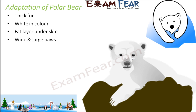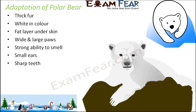Polar bears have wide, large paws which help them to move over snow-covered areas. They have a strong ability to smell, which helps them sense the presence of prey in the vicinity. They also have small ears — if an organism has big ears, heat loss through the ears would be greater, so small ears reduce heat loss to help them survive the cold.